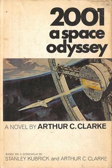2001: A Space Odyssey is a 1968 science fiction novel by British writer Arthur C. Clarke. It was developed concurrently with Stanley Kubrick's film version and published after the release of the film. Clarke and Kubrick worked on the book together, but eventually only Clarke ended up as the official author. The story is based in part on various short stories by Clarke, including The Sentinel, written in 1948 for a BBC competition but first published in 1951 under the title Sentinel of Eternity. By 1992, the novel had sold 3 million copies worldwide.